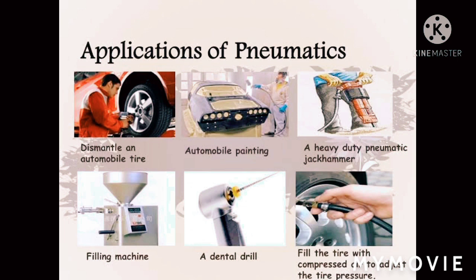Now, examples of pneumatic systems and components. First, air brakes on buses and trucks. Second, air brakes on trains. Third, air compressors for air engines and pneumatically powered vehicles.